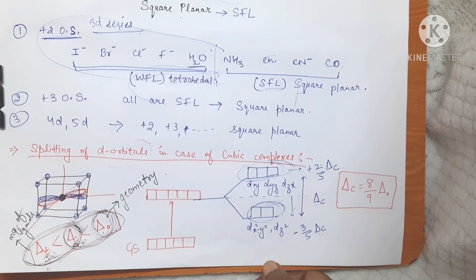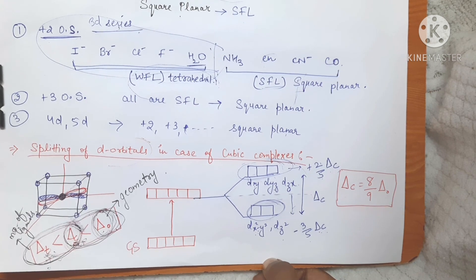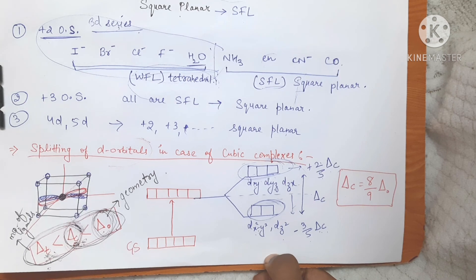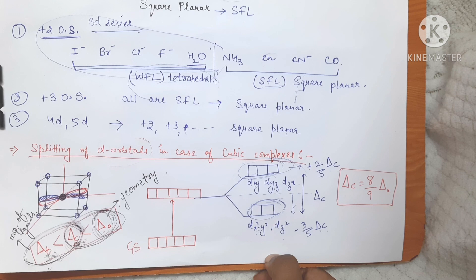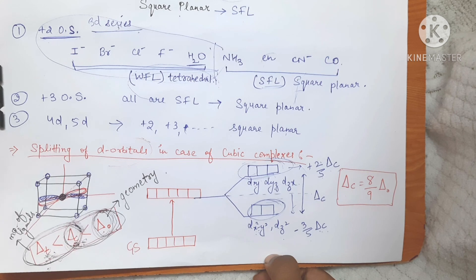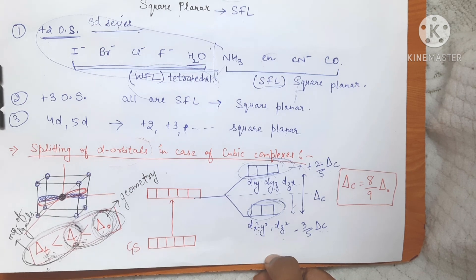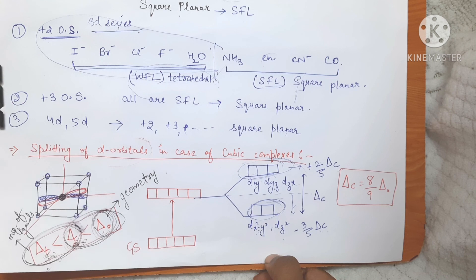That's it for this video. In the next video we are going to discuss the splitting of d orbitals in case of icosahedron. You can try it yourself — draw a full figure of icosahedron, analyze the orientation of d orbitals, and determine which ligands approach on the axis and which approach in between the axis. If ligands approach on the axis, dx²−y² and dz² will have increased energy; if they approach in between, dxy, dyz, and dzx will have increased energy. Otherwise, I will do it in the next video.